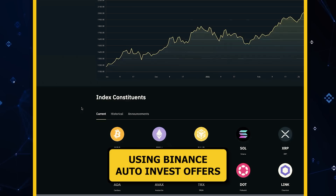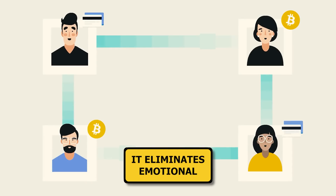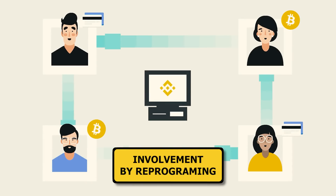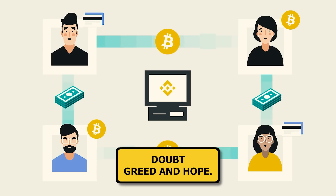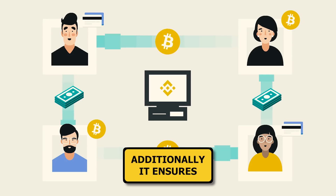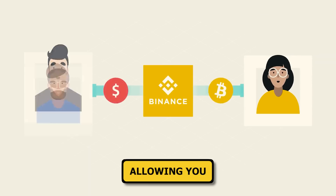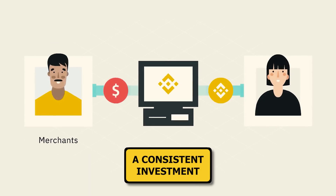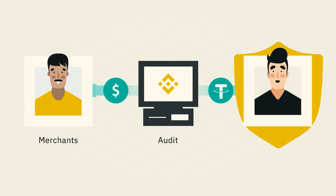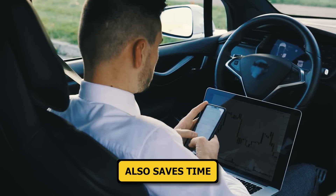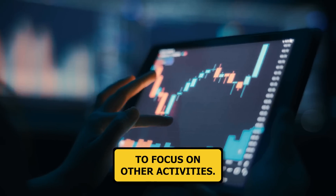Using Binance Auto Invest offers various advantages over manual trading. It eliminates emotional involvement by pre-programming your investments, reducing the influence of fear, doubt, greed, and hope. Additionally, it ensures consistency in your trading decisions and frequency, allowing you to follow a consistent investment strategy without the hassle of repeatedly setting up trades. Automating your trades also saves time, as the system handles everything, freeing you to focus on other activities.